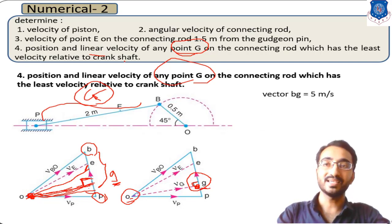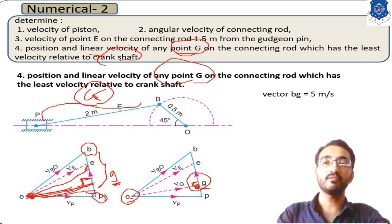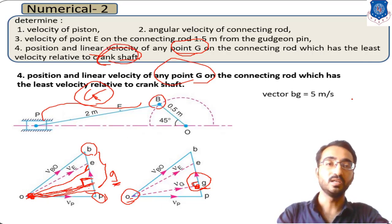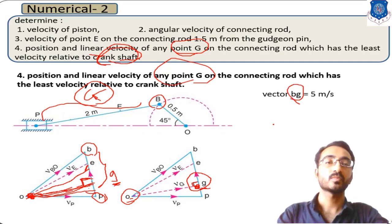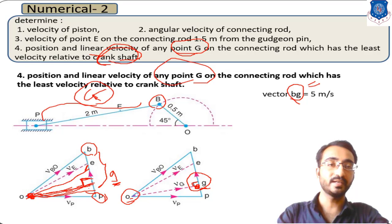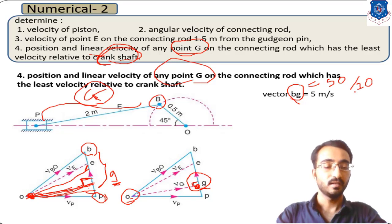Now we also need the velocity of point G on the connecting rod with least velocity, measured with reference to the crankshaft — that is, crank B. So we calculate velocity BG. If the measured length of BG on the velocity diagram is 50 mm and the scale is 10, then 50 divided by 10 gives the velocity of BG equal to 5 meter per second.